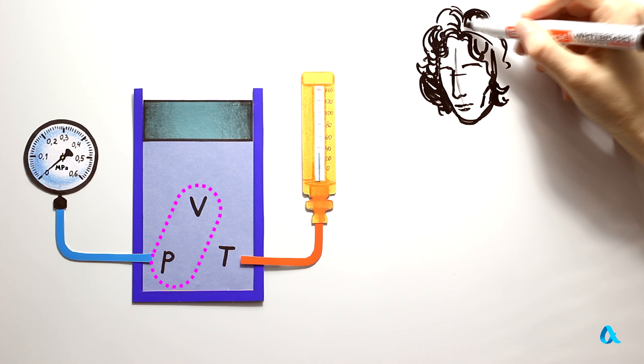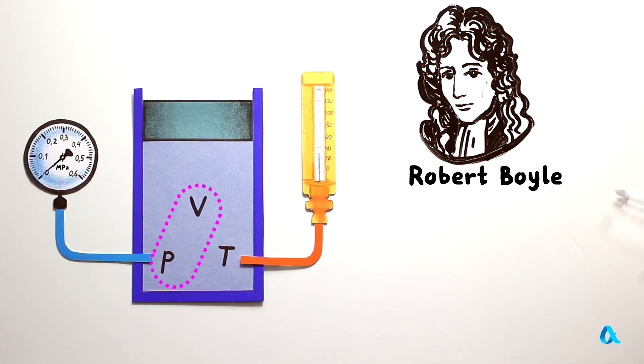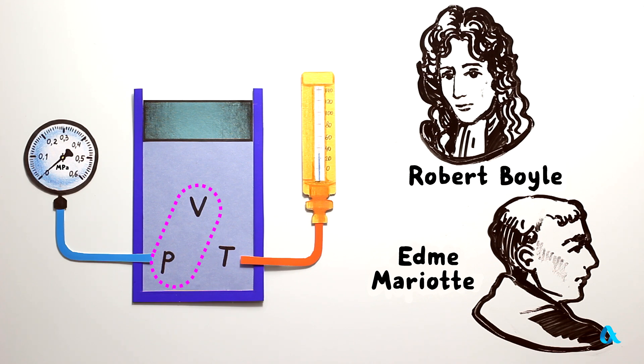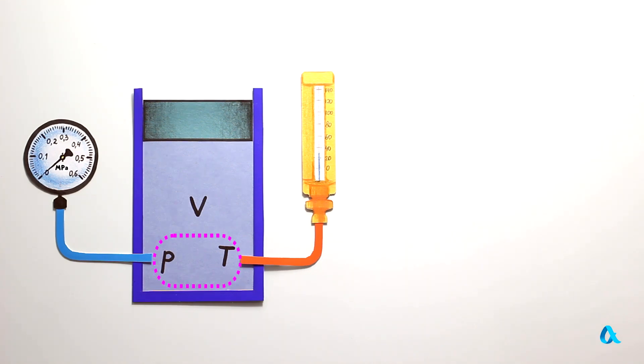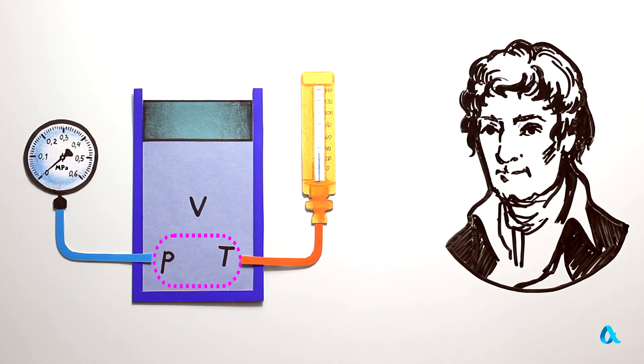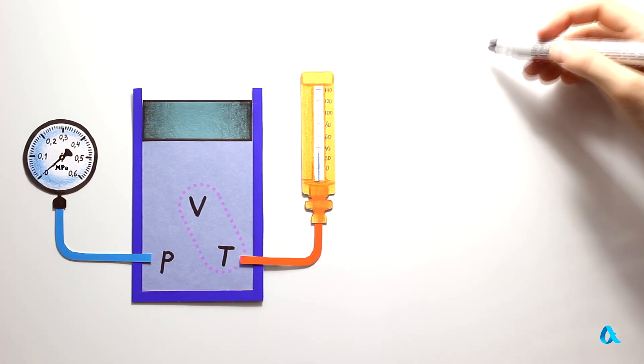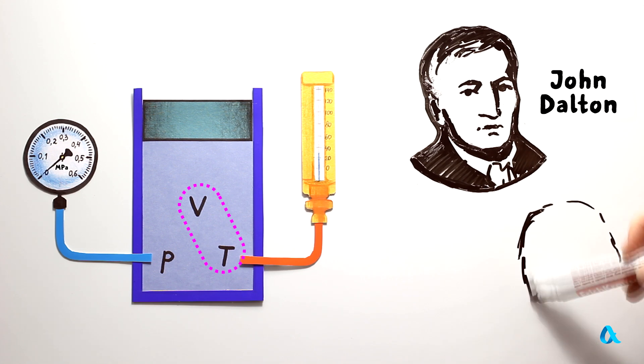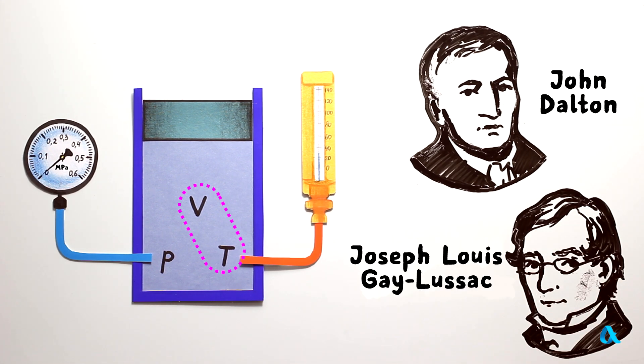An English physicist Robert Boyle and a Frenchman Edme Mariotte studied the connection between pressure and volume at constant temperature. A French scientist Jacques Charles had established the dependence of pressure on temperature at constant volume. An Englishman John Dalton and a Frenchman Joseph-Louis Gay-Lussac had studied the connection between volume and temperature at constant pressure.